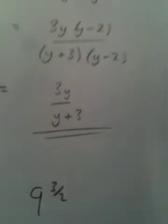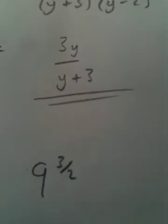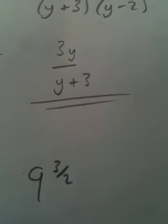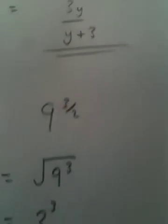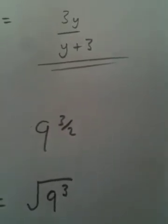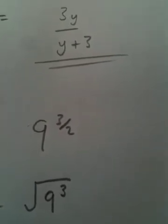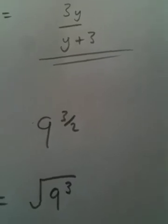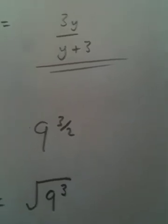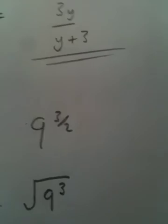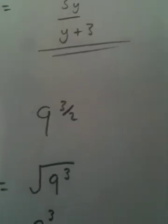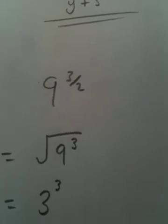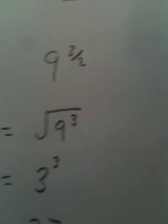On to number 7. 9 to the 3 over 2. Top of the fraction there tells us to cube it. The bottom number tells us which root to take. So, we're taking the square root of 9 cubed. Now, I could do 9 cubed. 9 times 9 times 9 is 729, then square root of 729, which is 27. It's far too much work, though. Square root of 9 first, we'll get 3. Then cube 3. 3 times 3 times 3 is 27.